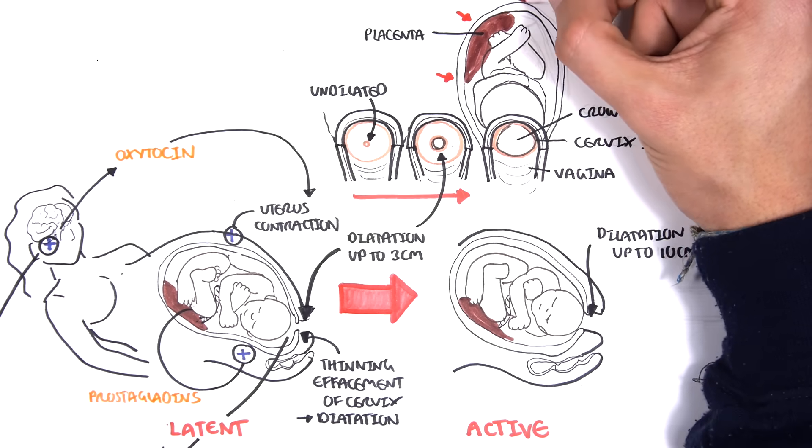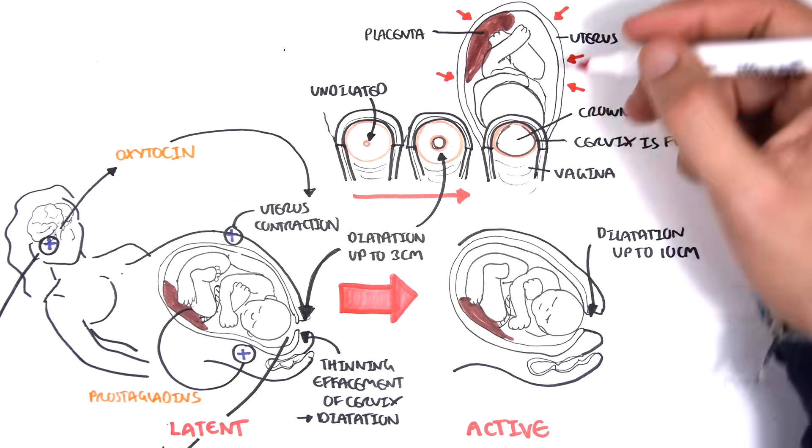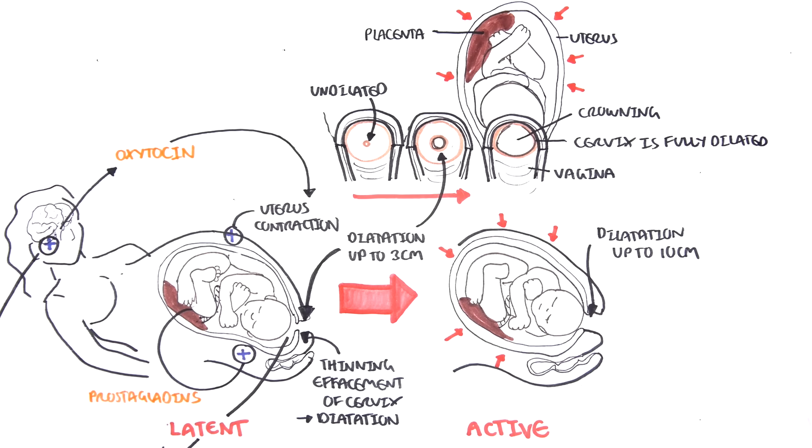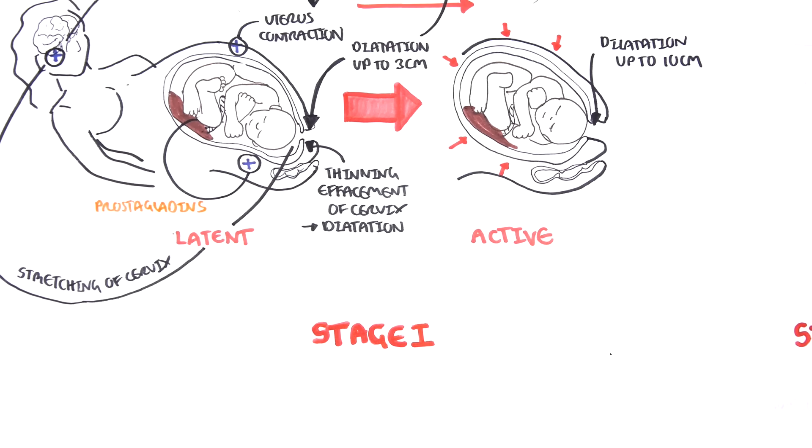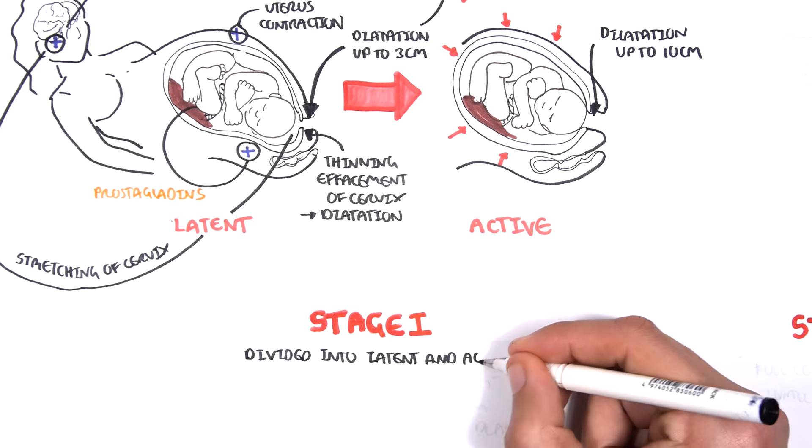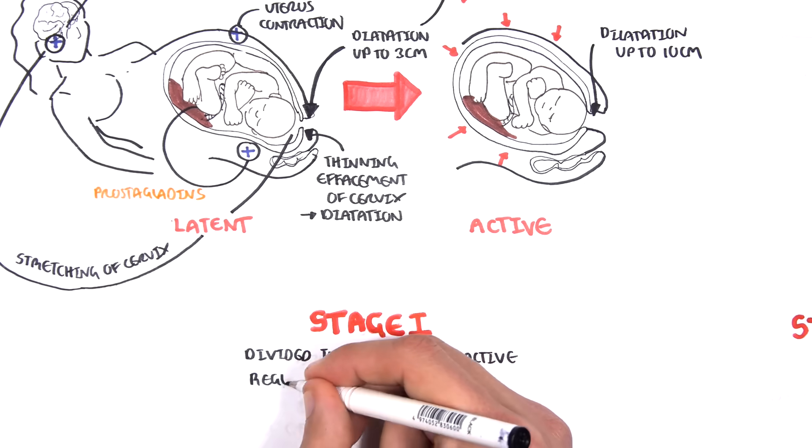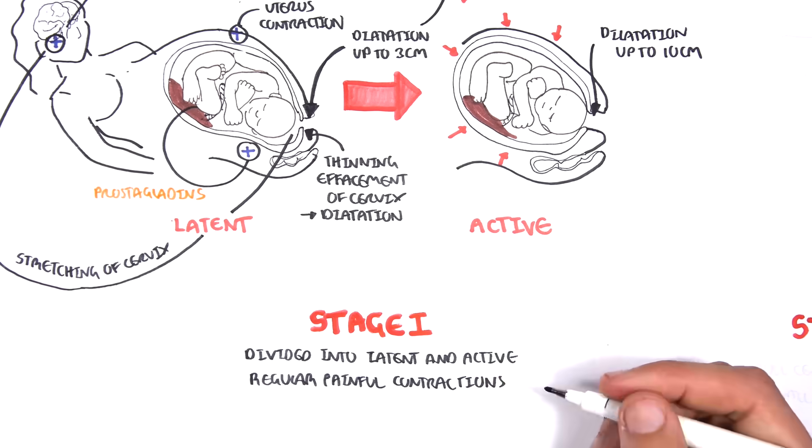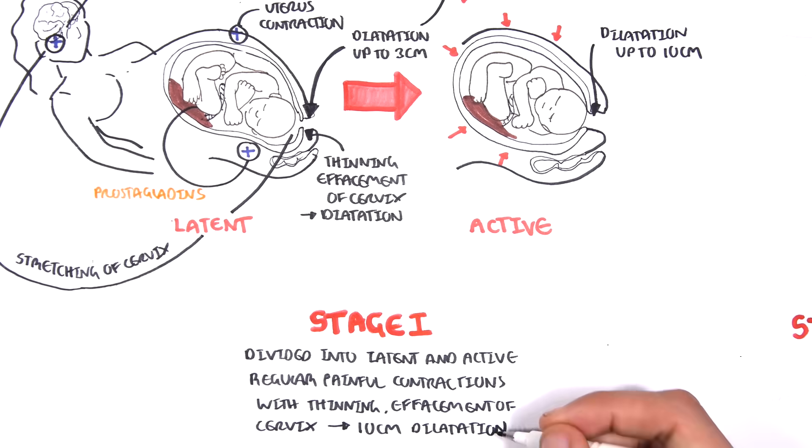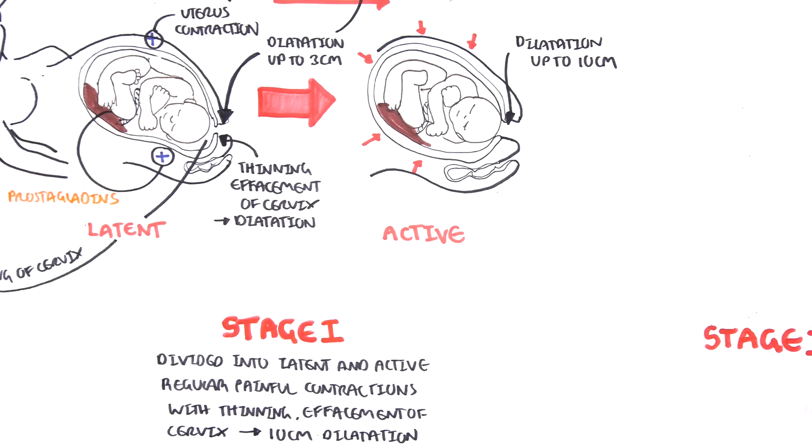The uterus is contracting all this time, remember, because of the oxytocin and prostaglandins. Recapping stage 1: Stage 1 is divided into the latent and active phase. Regular painful contractions with thinning, effacement of the cervix, is what happens in stage 1 until the cervix reaches 10cm dilatation or full dilatation.